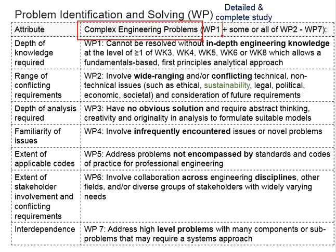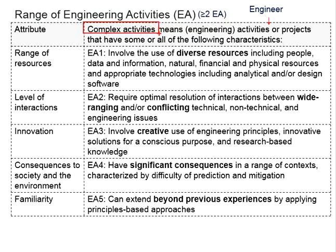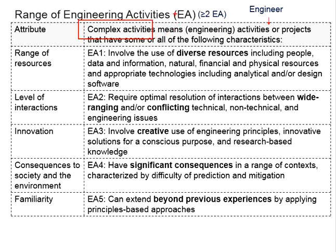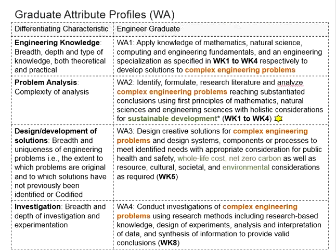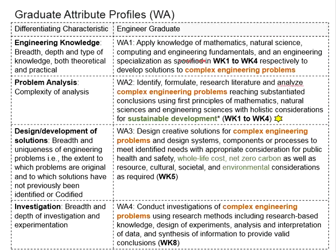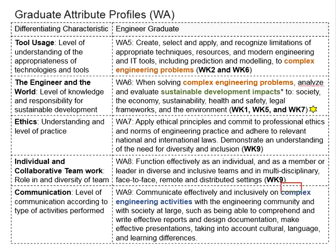So far we have covered the complex engineering problem as well as complex engineering activities. In short form, complex engineering problem is known as WP while complex engineering activities will be EA. We mentioned that complex engineering problems and complex engineering activities are to be incorporated within the curriculum, as part and parcel of the courses attending to the respective graduate attributes.